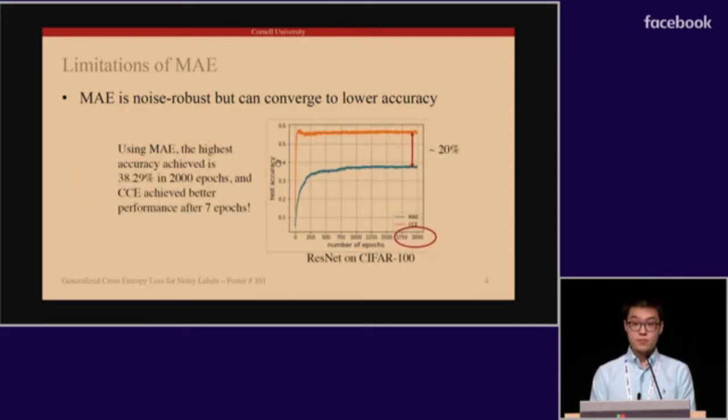The phenomenon is much more significant when using more difficult datasets like CIFAR-100. Using mean absolute error, the highest accuracy achieved is around 38% in 2000 epochs, and cross-entropy achieved much better performance after seven epochs.